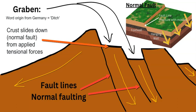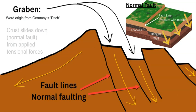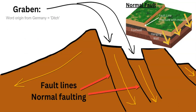If the faulting happens on one side it's called a half-graben. In theory there will be two grabens on either side, but if the rift is really large — like an ocean basin such as the Atlantic between North America and Europe or Africa — then each side will be called a half-graben.